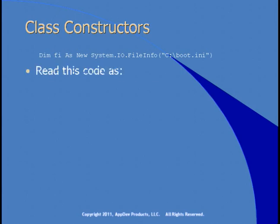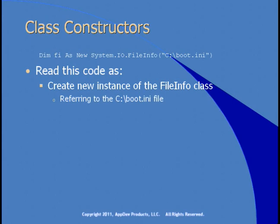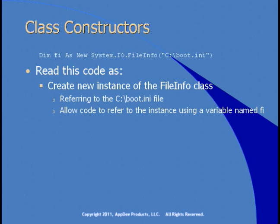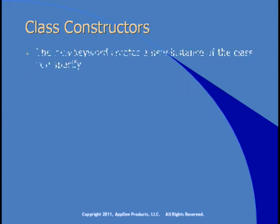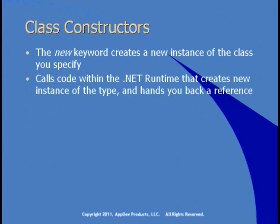Our sample included a line of code like this. How do you read that? Create a new instance of the FileInfo class — that's the 'new System.io.FileInfo' part — referring to c:\boot.ini, the file I chose for this slide. And allow code to refer to this instance using a variable named fi. In this case, fi is the variable. It's going to refer to a FileInfo instance in memory that has information about c:\boot.ini within it. It's the new keyword that creates a new instance of the class you specify. This causes the .NET runtime to run code that creates a new instance of that type and hands you back a reference.